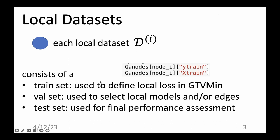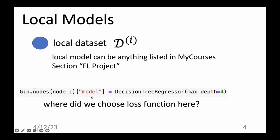How do we use them? The training set is used to define the local loss function within the GTV minimization problem. The validation set is used to choose between different local models — for example, a linear model or a decision tree — by picking the one with the smaller validation error. You also define a test set for each node for the final performance assessment of the local model.